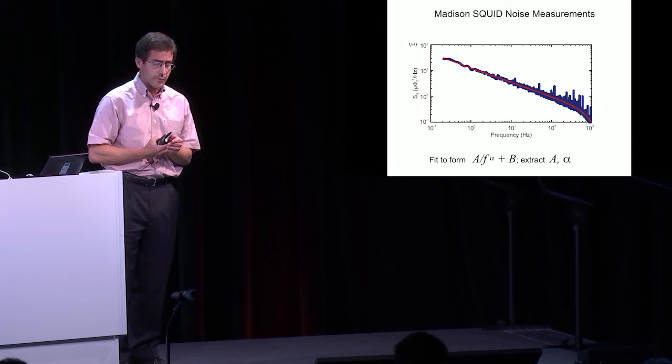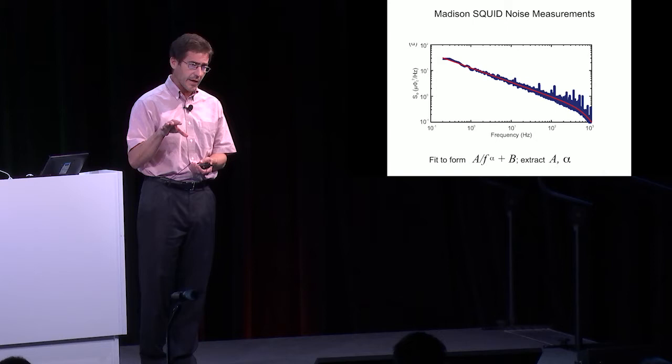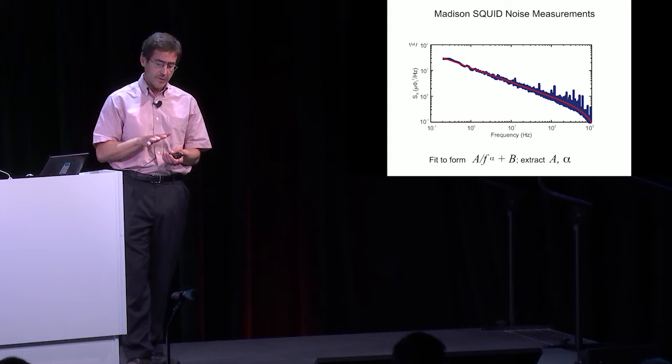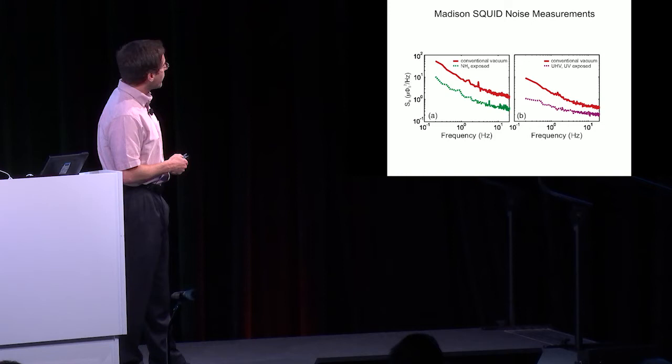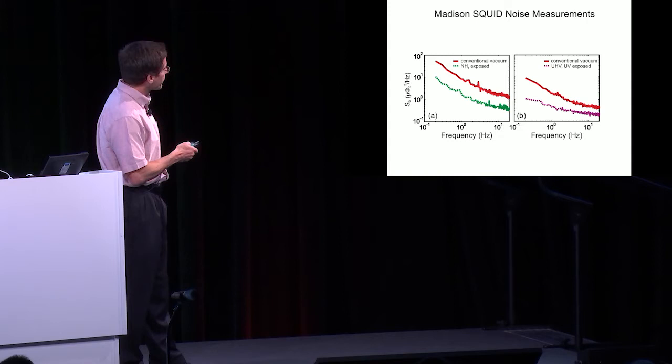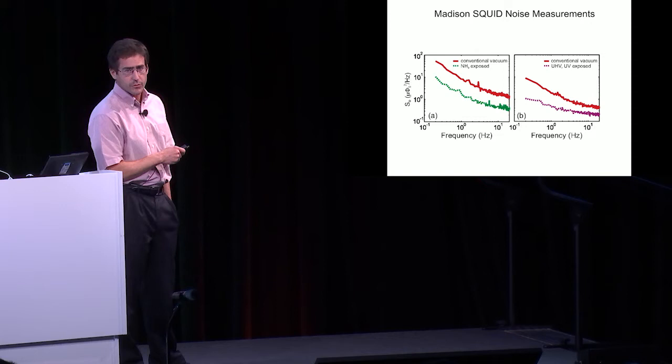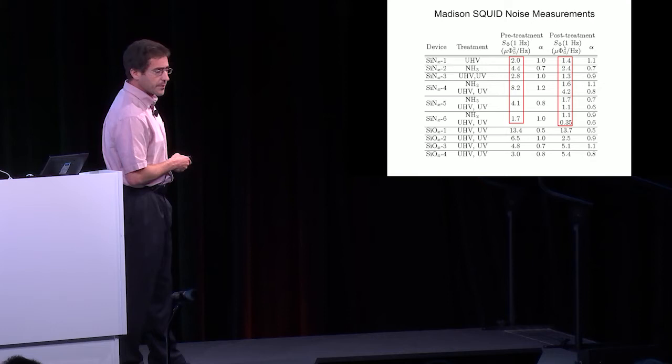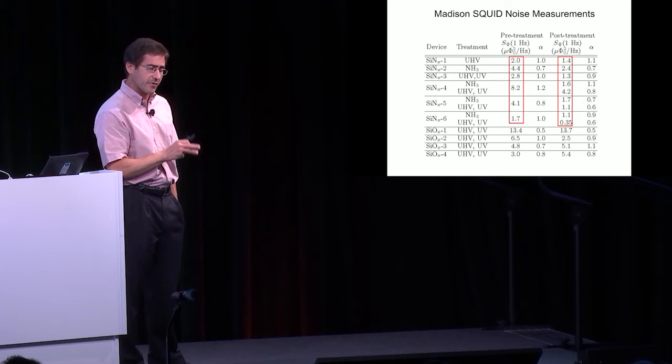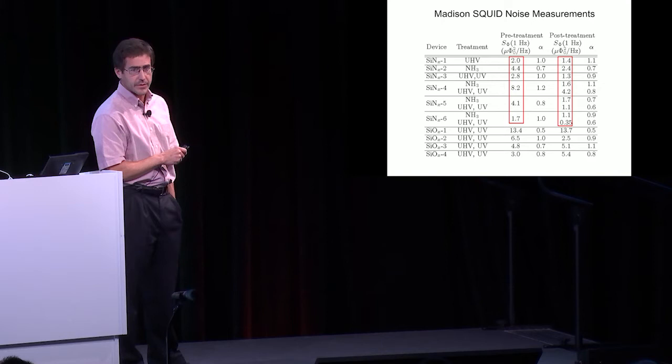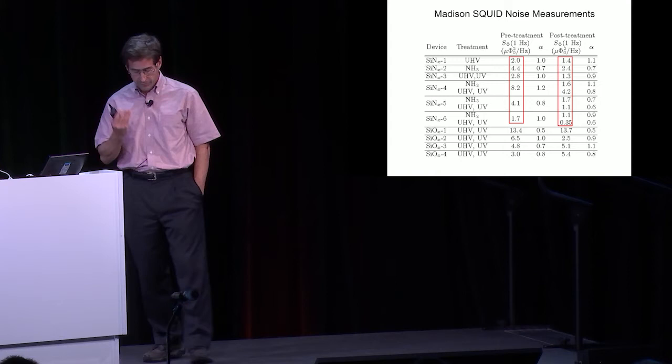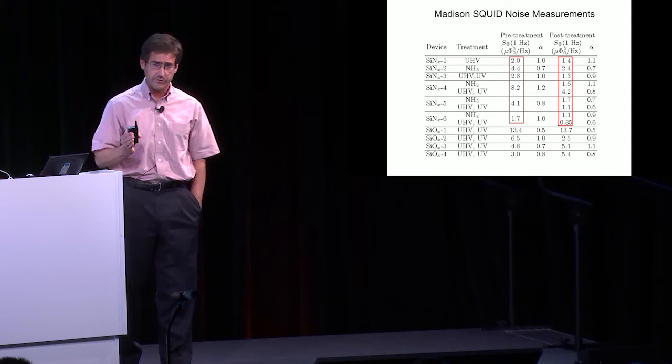Both approaches work. We've got before-after spectra of devices without special treatment and then with improved vacuum environment or ammonia passivation. We've seen suppressions of noise power spectral density by up to about a factor of five. There are subtleties I don't have time to get into, but the bottom line is after 30 years, this is the first experiment showing any reduction in flux noise power. This is really exciting.